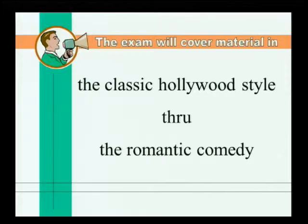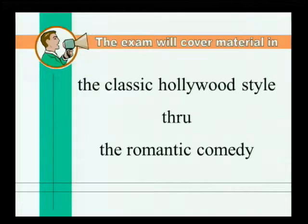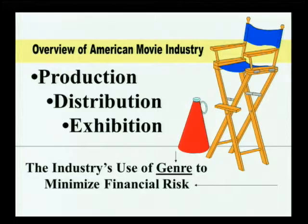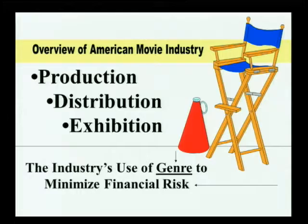What do you need to know? The exam will cover material in the classic Hollywood style, which goes all the way back to the first week, through the romantic comedy being shown this week. We began by looking at the American movie industry. The overview of the American movie industry comprises three things: production, distribution, and exhibition. When Hollywood becomes an industry, studios are involved in producing movies and distributing movies to their own theaters — they are an oligopoly.